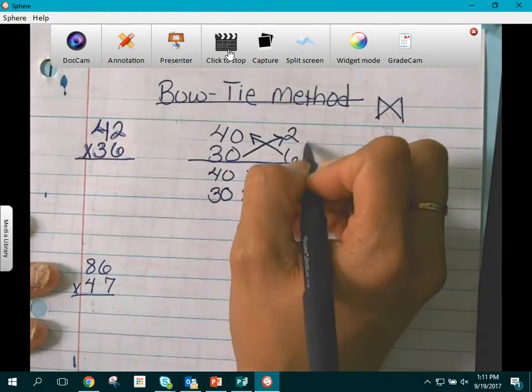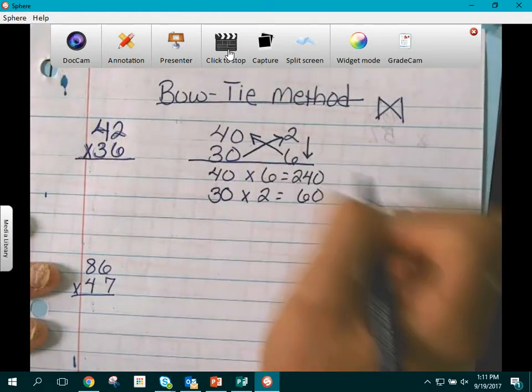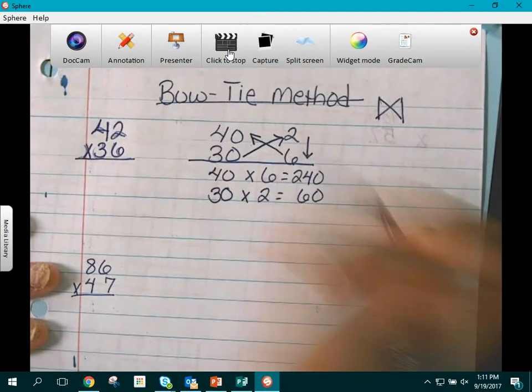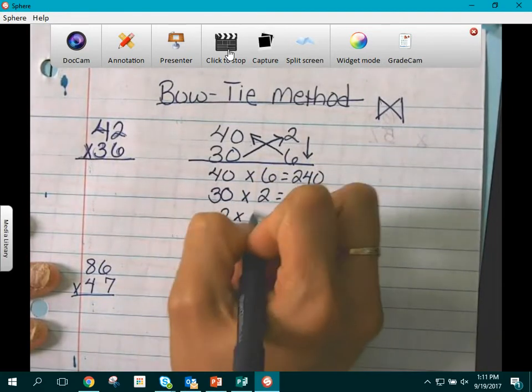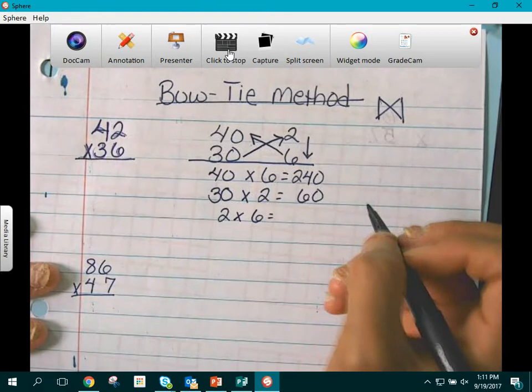We are going to come down and we are going to multiply the 2 ones. So we have 2 times 6 which is going to equal 12.